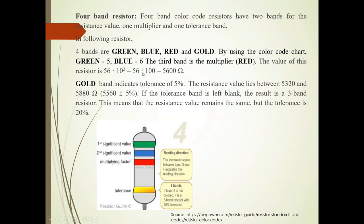So it is 56 into 100. So it is 5,600 ohm. The value of this resistor is 5,600 ohm. Now gold band is there. It indicates tolerance of 5%. So the resistance value lies between 5320 and 5880 ohm.